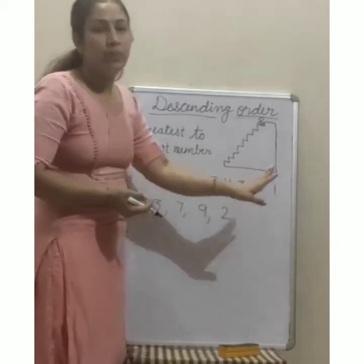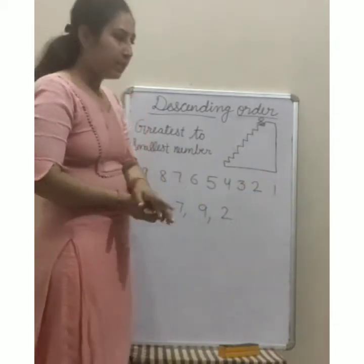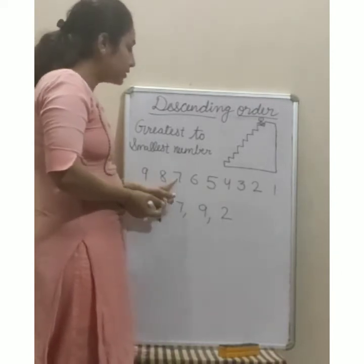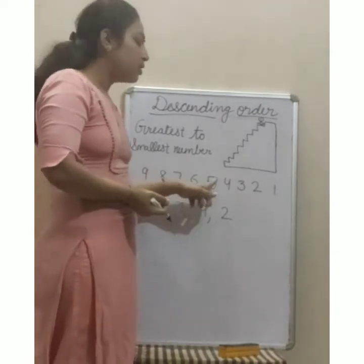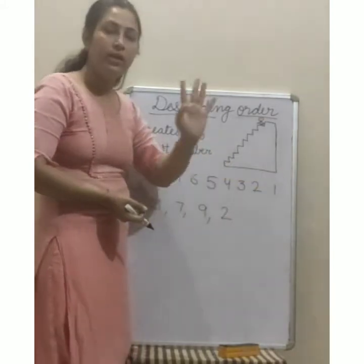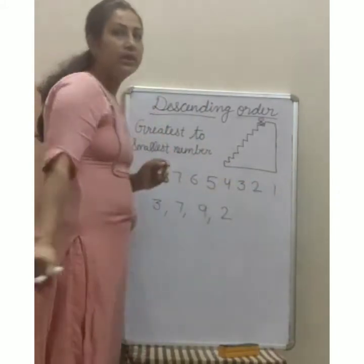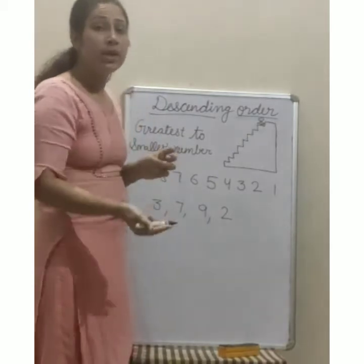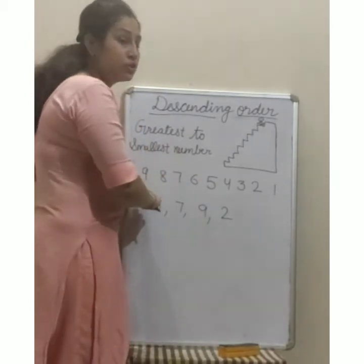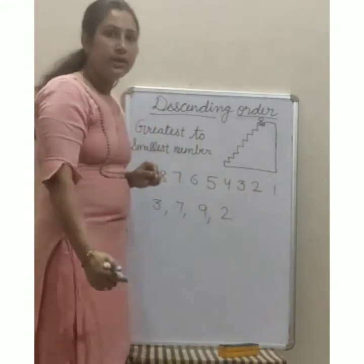ये क्या है? This is backward counting। Backward counting आती है आपको — 9, 8, 7, 6, 5, 4, 3, 2, 1। ठीक है? इसमें हमने क्या लिखा हुआ है? Greatest से smallest की ओर जा रही है number।